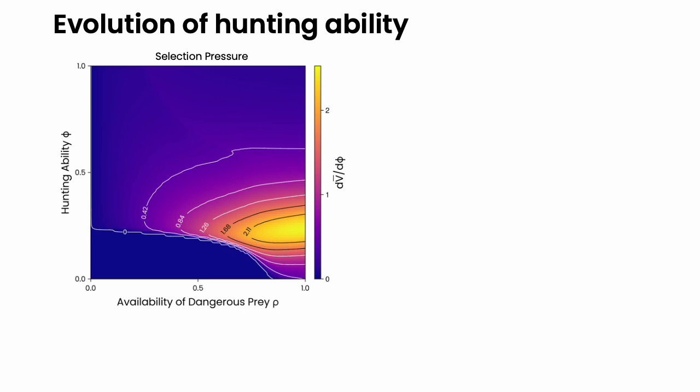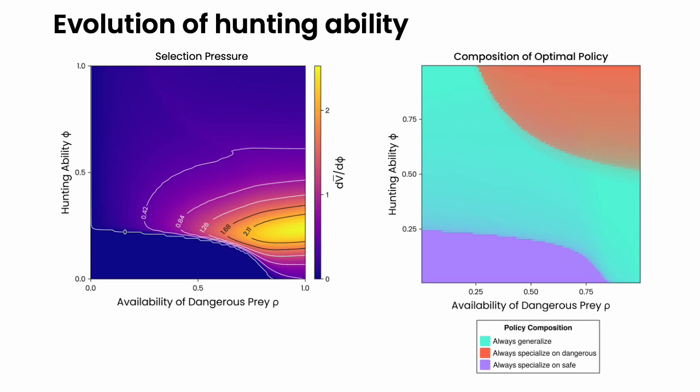And one can see that the hunting ability in the bottom left corner is exactly zero, which means that even if there is a small increase in the hunting ability in this region, it will not be selected for. And this can be understood by looking at the plot of the optimal policy.